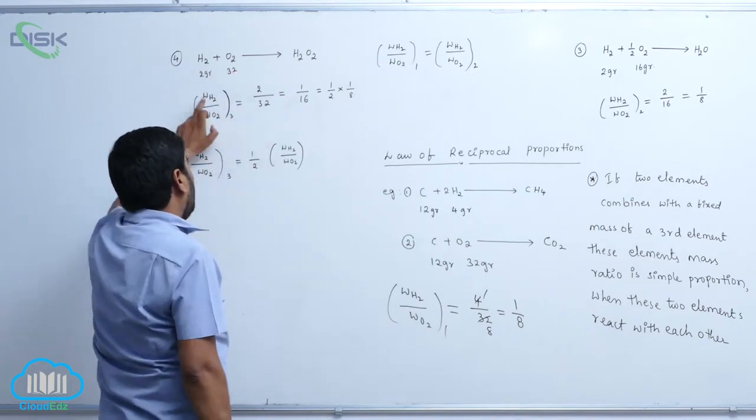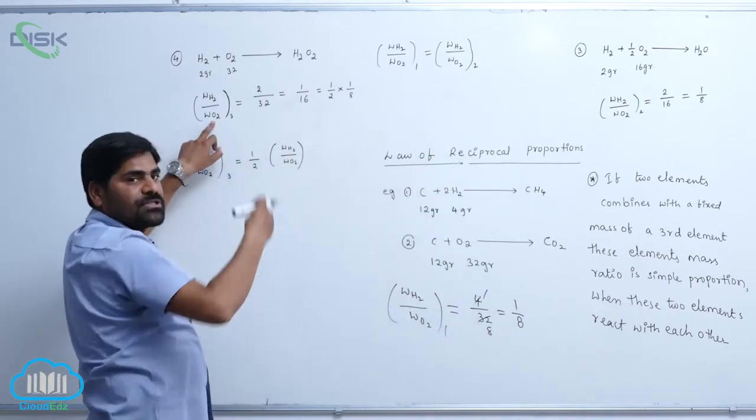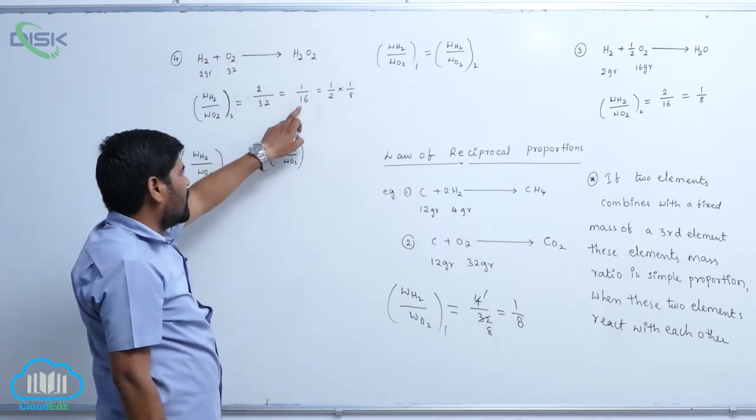32 by 2, weight of hydrogen by weight of oxygen. We are taking constant proportions. Therefore, 2 by 32 means 1 by 16.